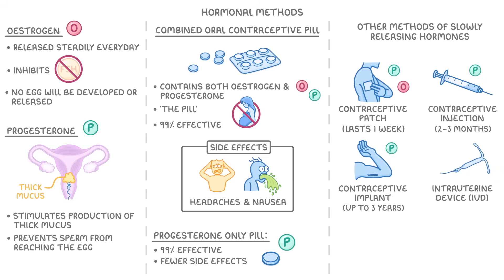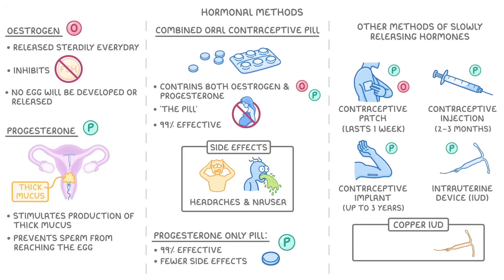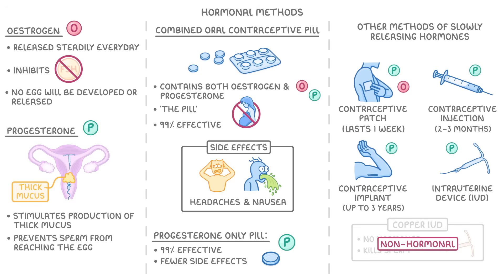Lastly, there's the intrauterine device, or IUD, which is placed inside the uterus. The plastic version releases progesterone, which remember will stimulate the production of thick mucus in the cervix. There's also a copper version of the IUD, but it doesn't involve any hormones — it just prevents sperm from surviving in the uterus by killing them. So do remember that the copper IUD, which is sometimes called the copper coil, isn't a hormonal contraceptive. Both the plastic and copper IUD can last over three years.